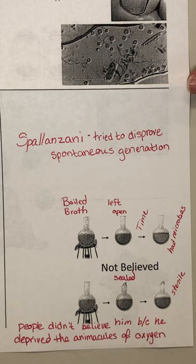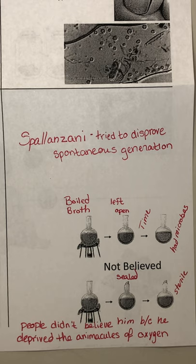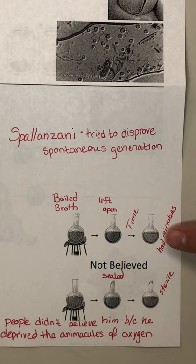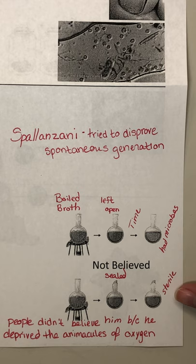He boiled broth — which would kill all the microbes living inside it. In his experiment he left one flask open and sealed one, then let time pass and looked at each. The one that was open had microbes; he could explain that microbes in the air were able to come inside and mix with the broth. But when he broke open the sealed one, he found it was still sterile — nothing had grown, no bacteria, no protists.